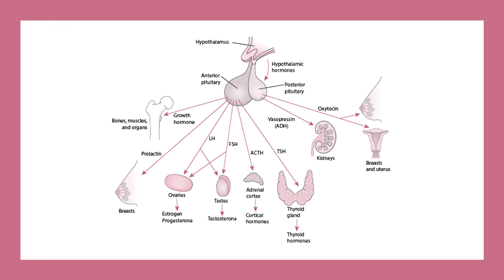The posterior lobe of the pituitary gland is essential for the secretion of vasopressin and oxytocin. Vasopressin is essential for water and electrolytic balance of the body. Oxytocin is essential for contraction of the myoepithelial cells of the mammary gland for milk ejection, and for contraction of the uterus during labor.